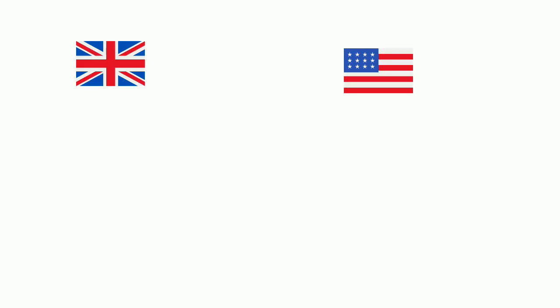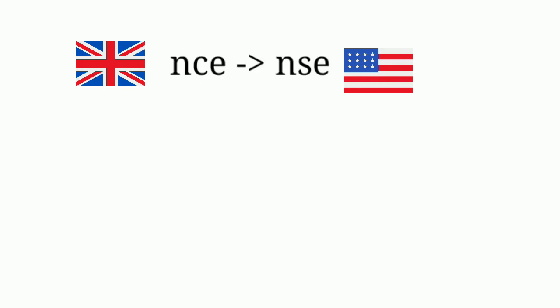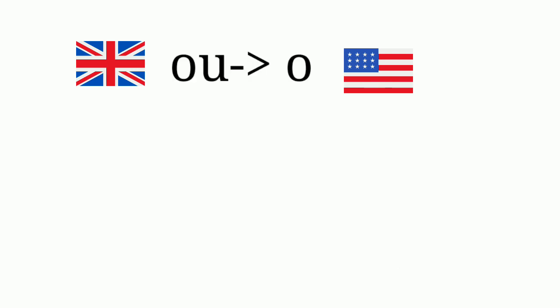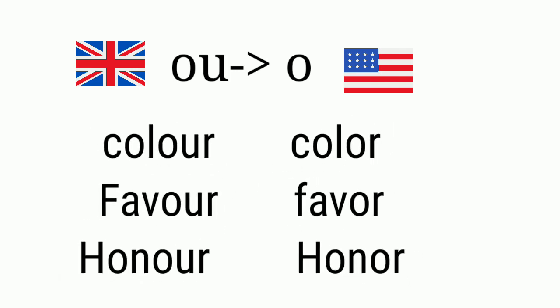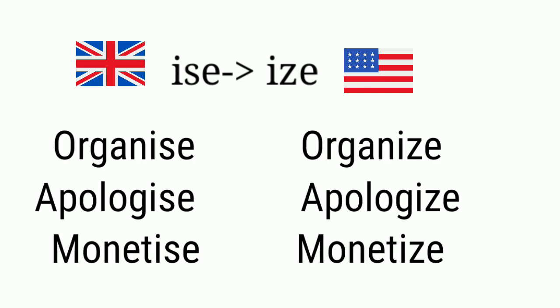The British and American spellings differ partly because of Noah Webster, who reformed spellings in the 1700s. Words ending in '-re' in the UK end in '-er' in the US — for example: centre/center, theatre/theater, metre/meter. Some words ending in '-nce' in the UK end in '-nse' in the US — for example: licence/license, defence/defense, offence/offense. Words with 'ou' in the UK use a single 'o' in the US — for example: colour/color, favour/favor, honour/honor. And endings '-ise' in the UK become '-ize' in the US — for example: organise/organize, apologise/apologize, monetise/monetize.